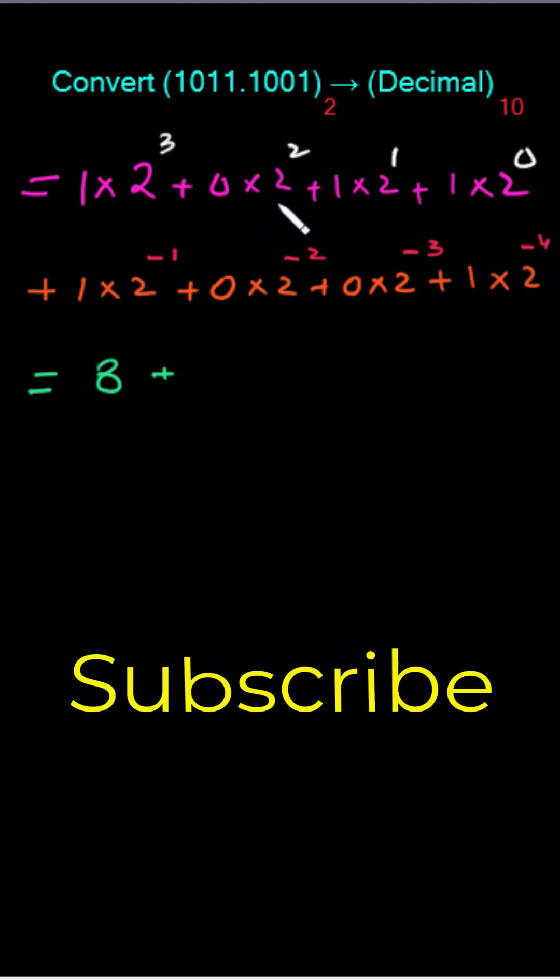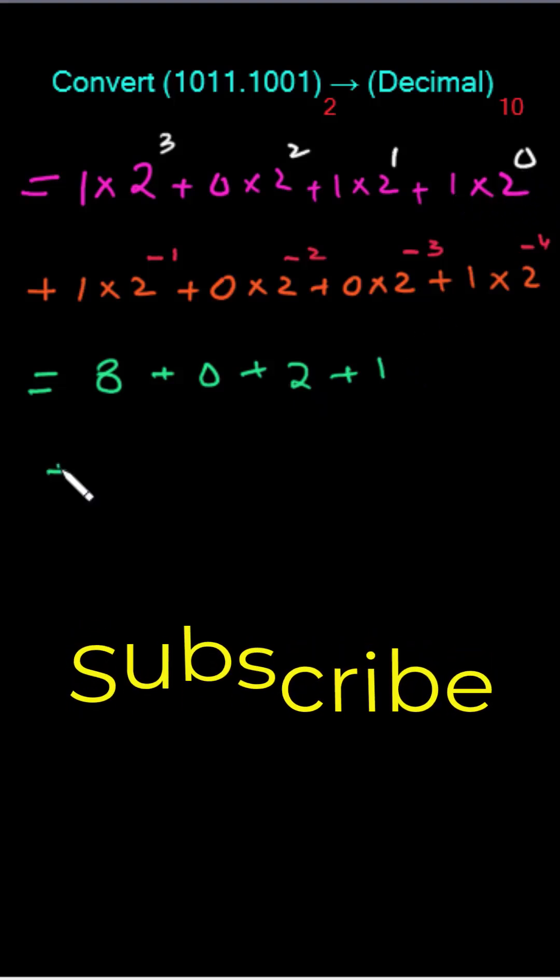So this one gave me 8. This will give us 0. 0×4 will give us 0. This one will give us 2, and 1×2^0 is equal to 1. This is the whole part.